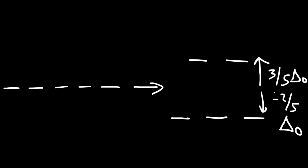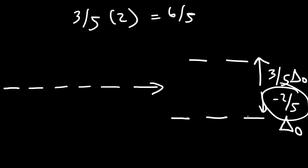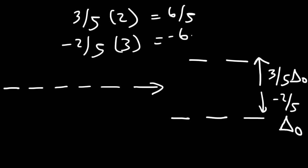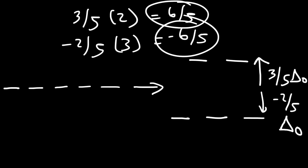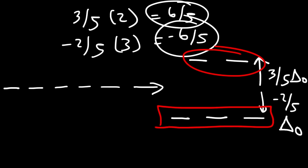You might be wondering where we get the numbers 3/5 and -2/5. To conserve energy: if we multiply 3/5 by 2 (because 2 of the d orbitals went up), we get 6/5. And if we multiply -2/5 by 3, we get -6/5. These two numbers add up to zero. So the amount of energy used to bring up the 2 d orbitals on top equals the energy released by bringing down the three orbitals at the bottom — energy cannot be created or destroyed.